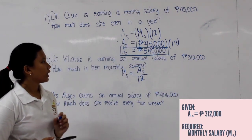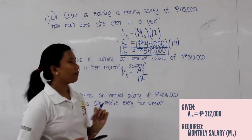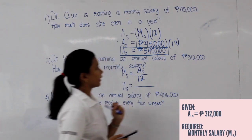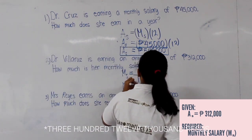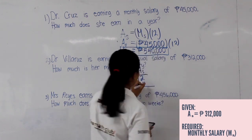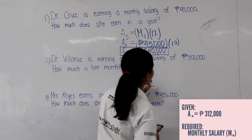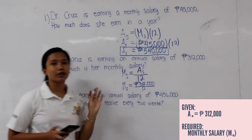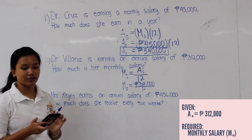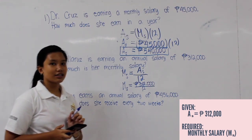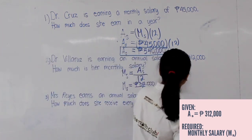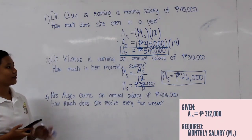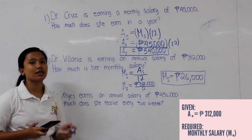Substituting the given: monthly salary is equal to 312,000 pesos divided by 12, and we get a final answer of 26,000 pesos. So, the answer for the second example is Dr. Bruce is earning a monthly salary of 26,000 pesos.